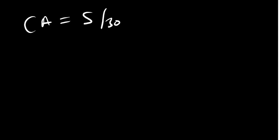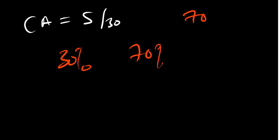We know that the exam is out of 70. The CA comprises 30 marks, which is 30%. Then the final exam is 70%. The total is 100.